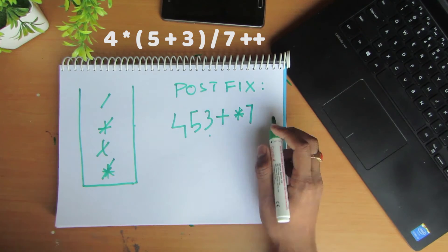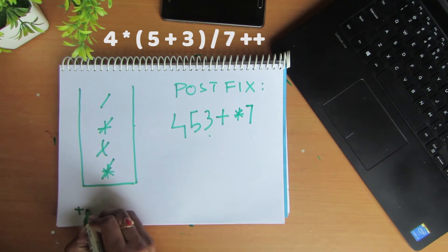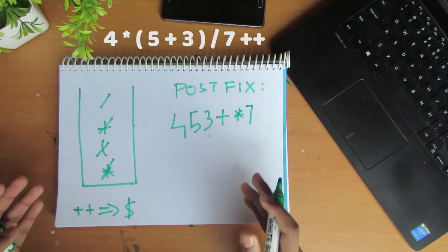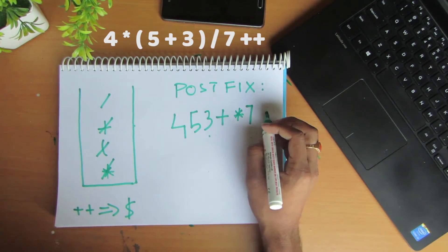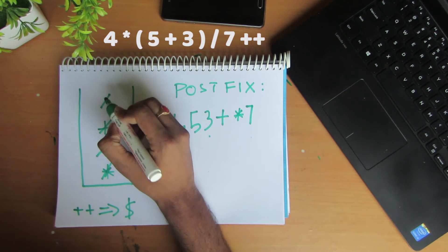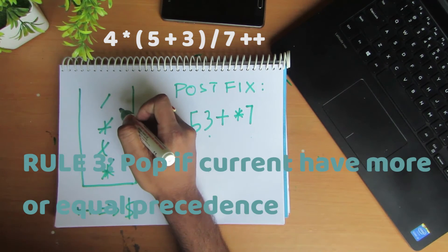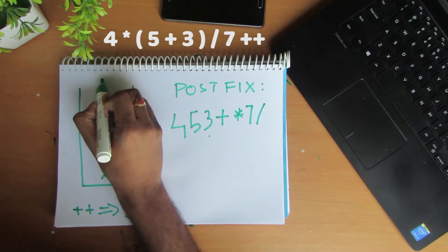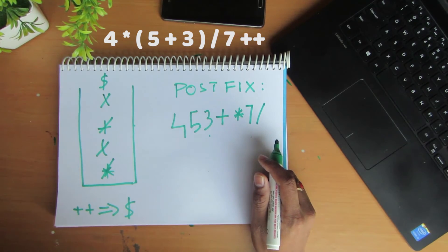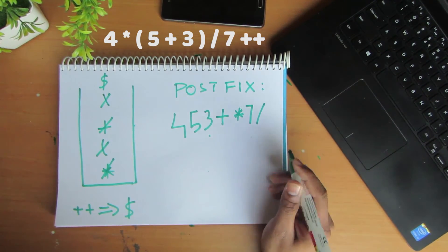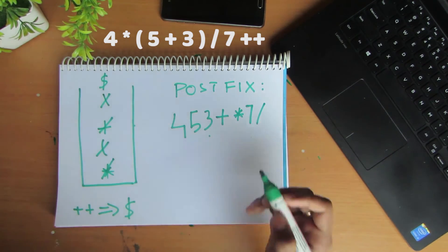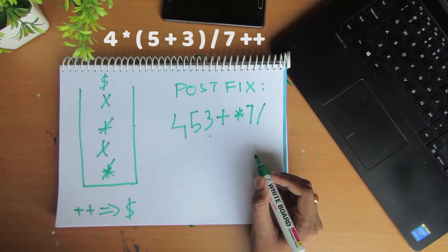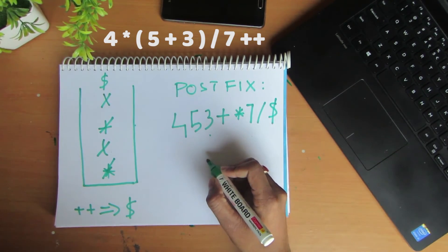The next one is ++, a unary operator. We check the top of the stack — the top is division, but ++ has higher priority, so we do not pop division. We push ++ onto the stack. The next character is null, meaning we have reached the end of the expression. The rule now is to pop all elements from the stack and add them to the postfix expression. We pop division and then ++, adding both to the postfix expression. The stack is now empty and we have successfully converted the infix expression to postfix.